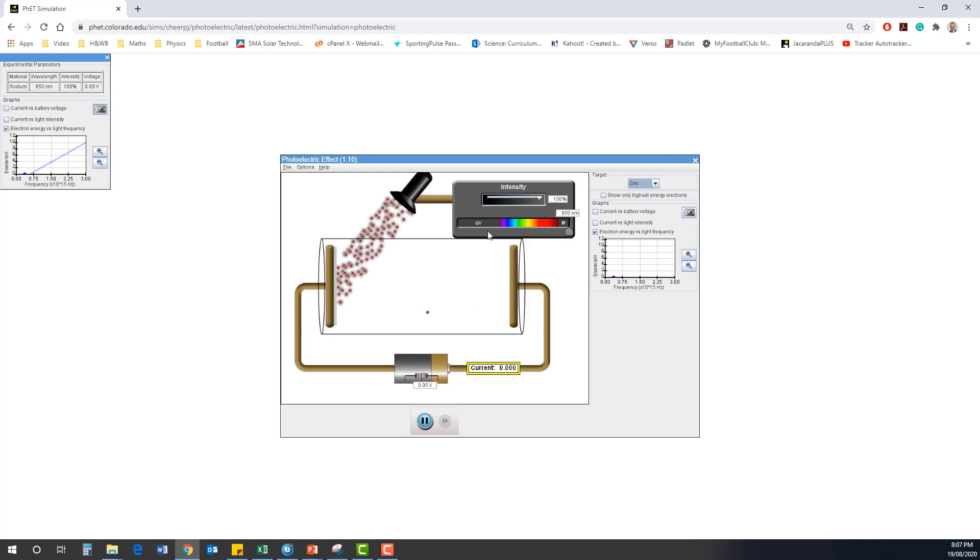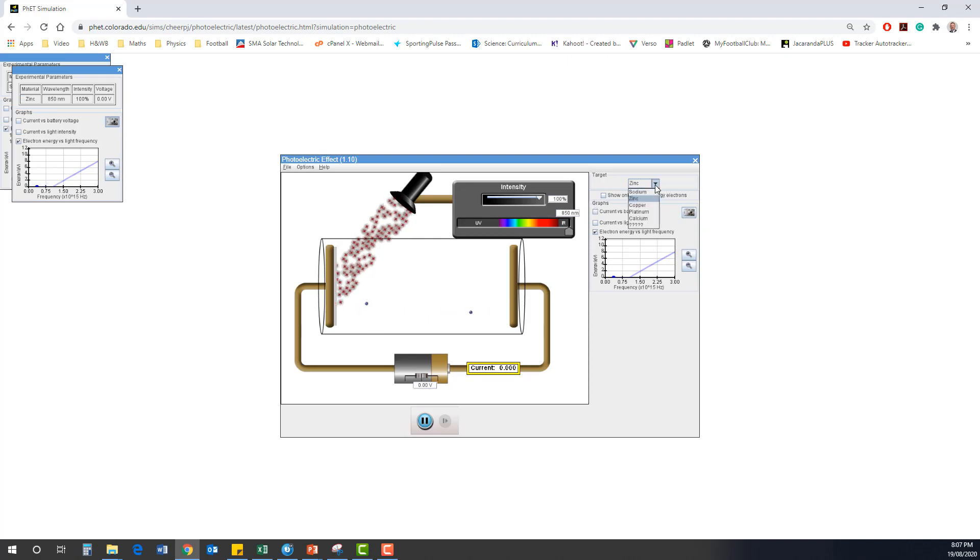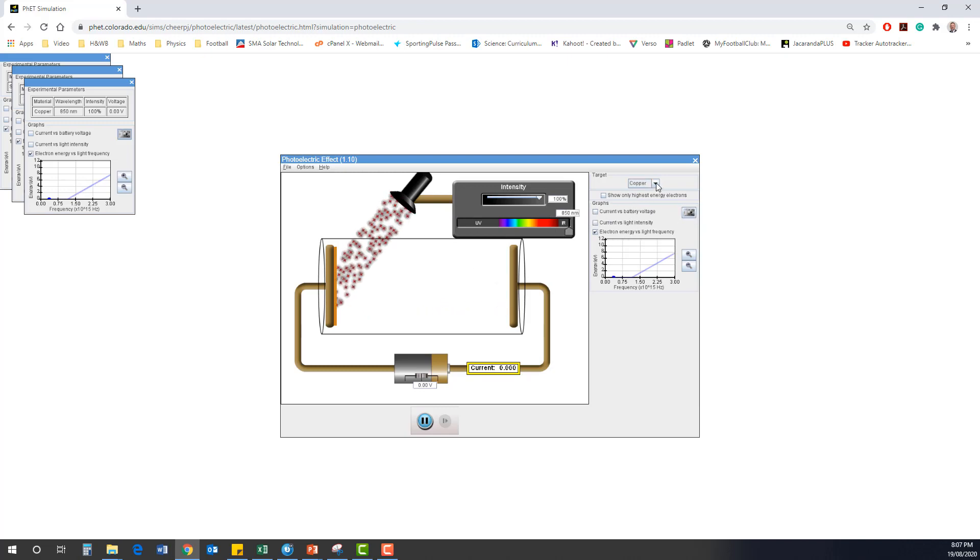Zinc. Full left and right. Take a picture. Change our cathode again to copper. Full left. Full right. Take a picture. A couple more times.